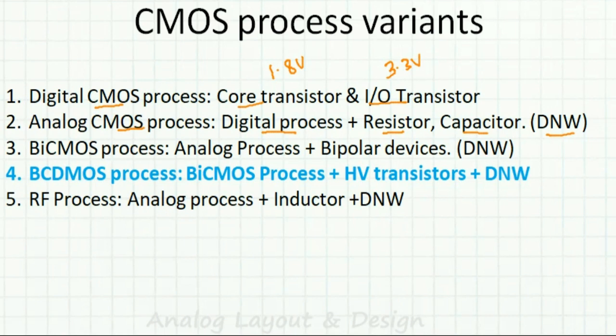We also have something known as the BiCMOS process. The BiCMOS process is the analog process — digital process plus resistor, capacitor, deep N-well — and also bipolar devices, which are nothing but NPN and PNP transistors.